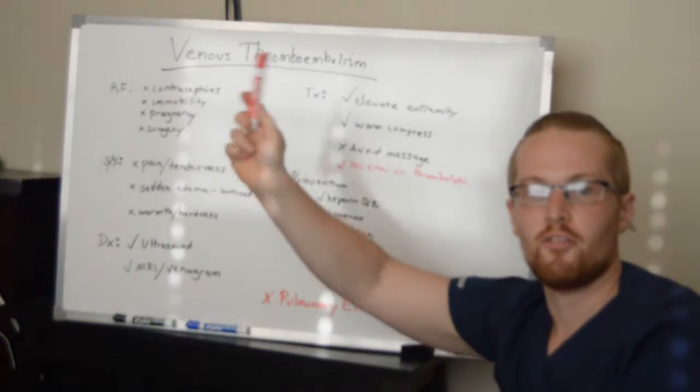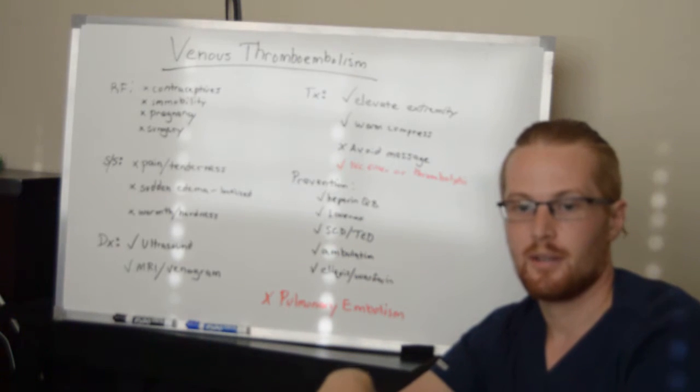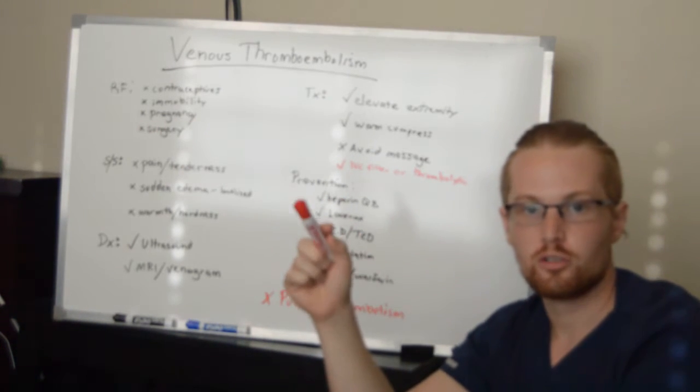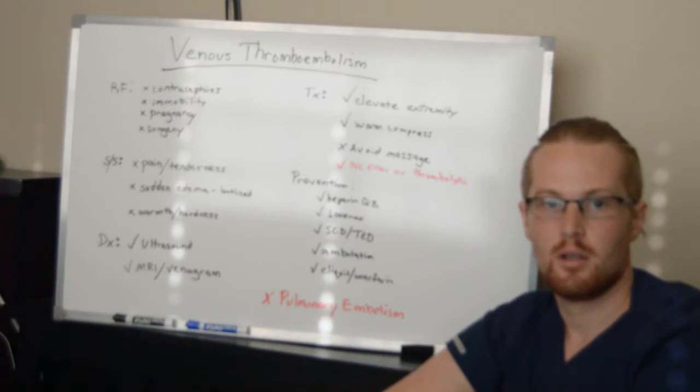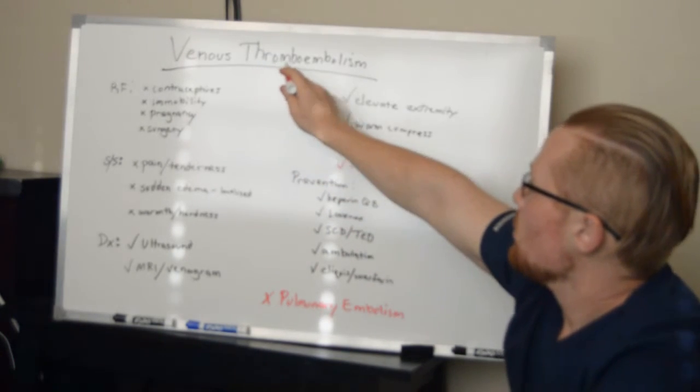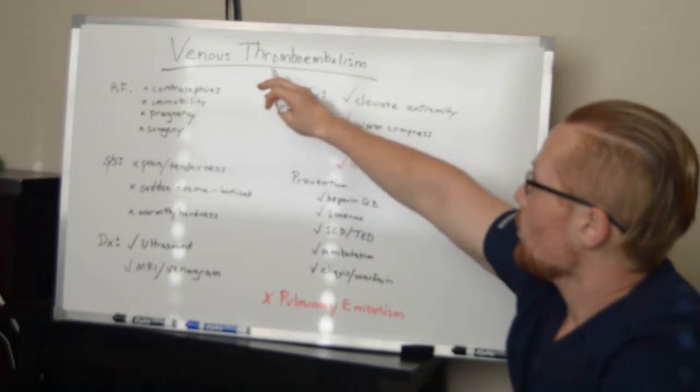In this video we're going to talk about venous thromboembolisms, also known as VTEs. So a venous thromboembolism, let's break it down. A thromboemboly - what this is, is a thrombus or an emboli, a blood clot.